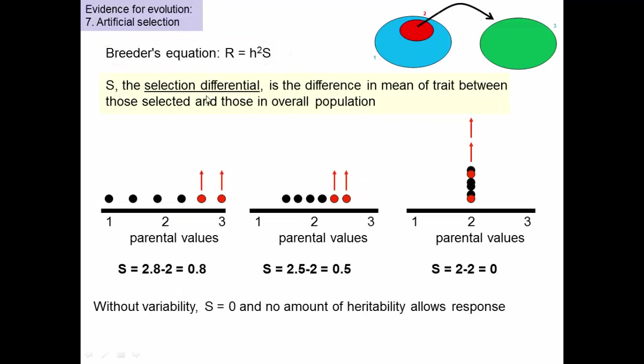The second part of that breeder's equation is the selection differential. That's the difference in the mean of the trait between those selected and those in the overall population. So imagine you have six individuals here spread out from one to three. The average is about two. If we selected the biggest two here, say their average is about 2.8, the selection differential would be 2.8 minus 2 is 0.8. So you would get a larger response than if, say, the population was less variable. If you selected again the two biggest individuals, but now their mean is maybe only 2.5, 2.5 minus 2 is 0.5, you would expect less of a response. And then if there was no variation, if everybody was exactly the same, then any two you select, 2 minus 2 is 0, 0 in there would give you no response. So without variability, the selection differential would be 0, and no amount of heritability would allow a response. Both heritability and variation, which allows a selection differential, are required to get this response.